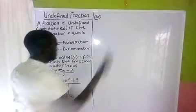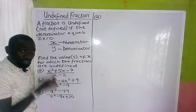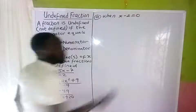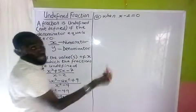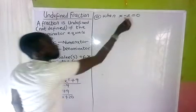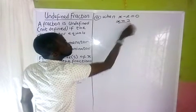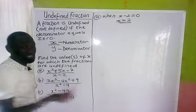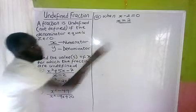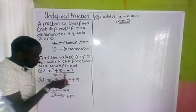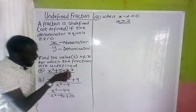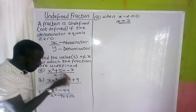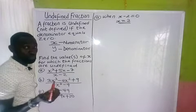Let's have the first one. This fraction will be undefined when x minus 2 equals zero. So we are looking for the value of x that will make this undefined. Which implies x equals 2. Do you see how simple this is? When we put 2 here, two minus two gives us zero, and anything over zero makes that fraction undefined.